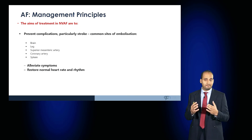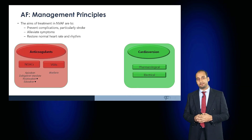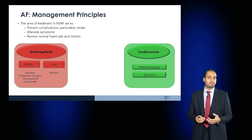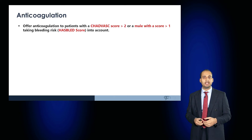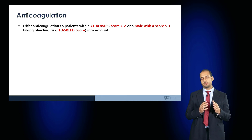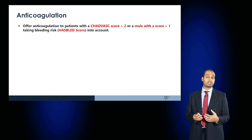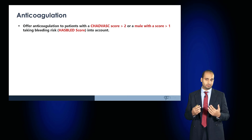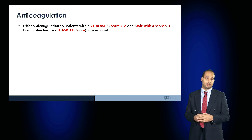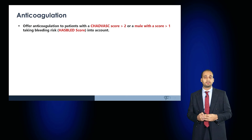Given these severe complications, anticoagulants are used to reduce the risk of stroke. Options include vitamin K antagonists such as warfarin, or the NOACs/DOACs — apixaban, dabigatran, rivaroxaban, and edoxaban. Patients are risk-stratified using the CHA₂DS₂-VASc score to assess stroke risk and the HAS-BLED score to assess bleeding risk. Generally, a CHA₂DS₂-VASc score greater than one in a male or greater than two in a female indicates the requirement to anticoagulate, provided there are no serious contraindications.